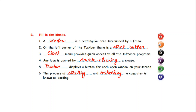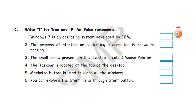Now move to next exercise: true and false. Number one: Windows 7 is an operating system developed by IBM — false. So write here F, because it is an incorrect statement. Number two: the process of starting or restarting a computer is known as booting — it is a correct statement. So write here T.